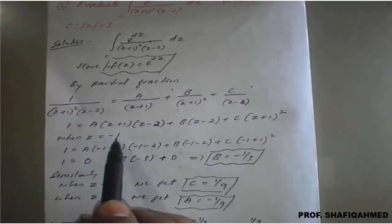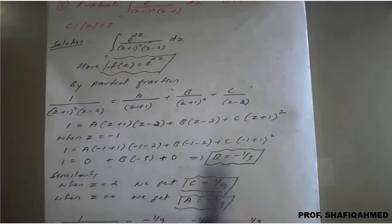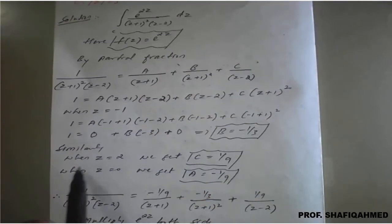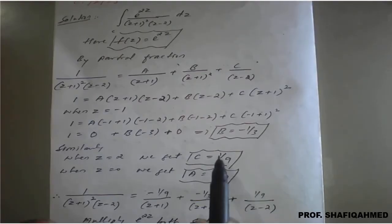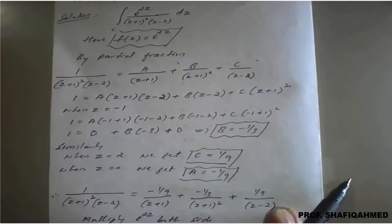If you put z equal to minus 1, we will get the B value as minus 1 by 3. Similarly, when you put z equal to 2 we will get C value as 1 upon 9. And when you put z equal to 0 we will get A equal to minus 1 upon 9.